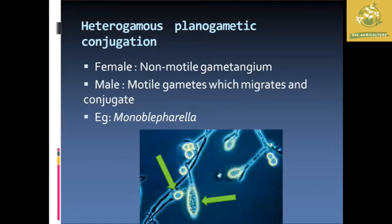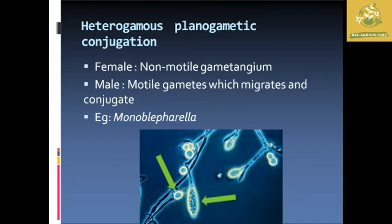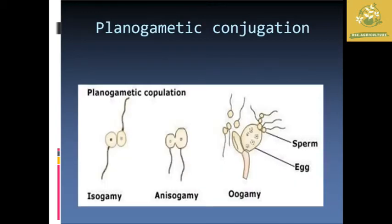In heterogamous planogametic copulation, one gamete is motile and the other is non-motile. The female ones are mostly non-motile gametangia — stagnant at one place — while the male one is mobile and motile. The male gamete migrates and conjugates in the reproduction process. Example: Monoblepharella. The larger, bigger one is the non-motile female gametangium, while the smaller male one moves from one place to another and carries out reproduction with the female.